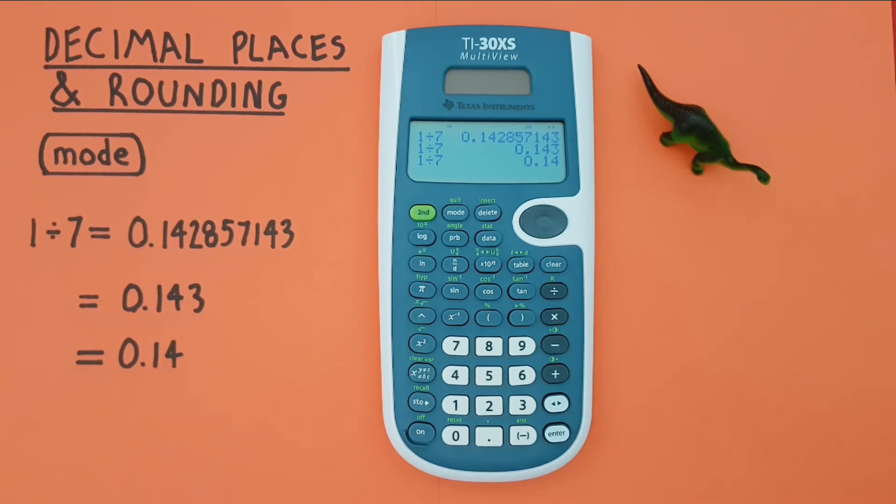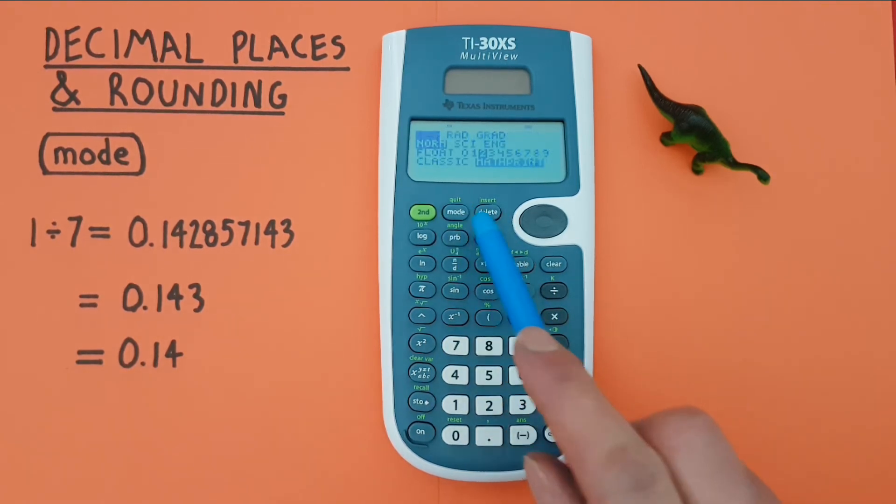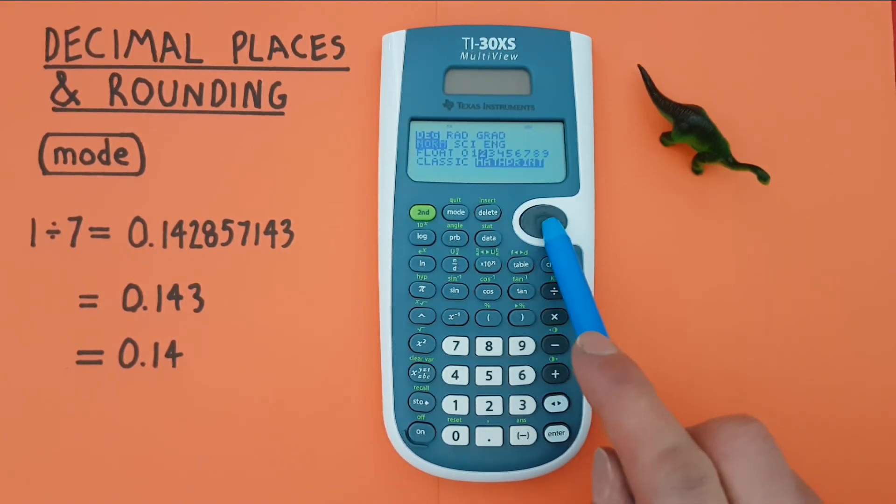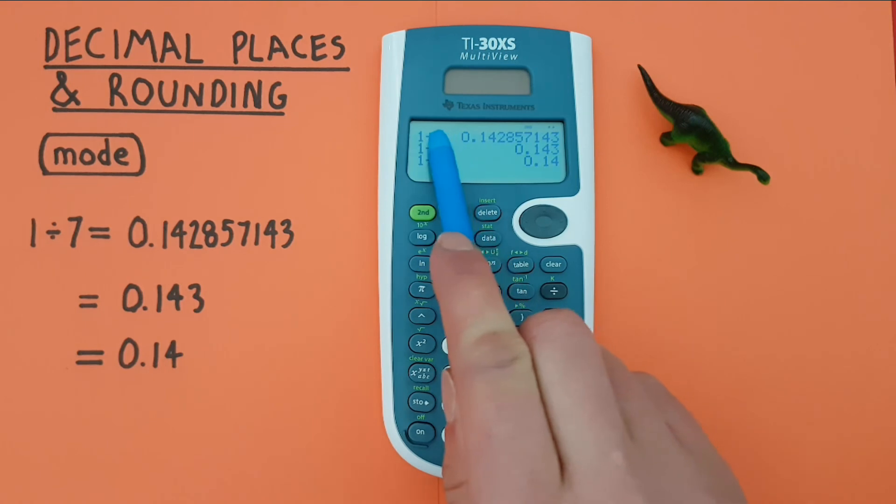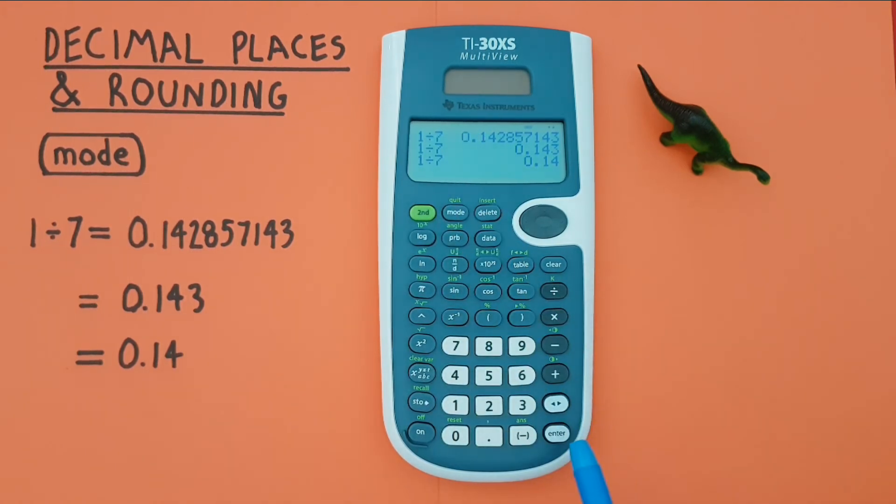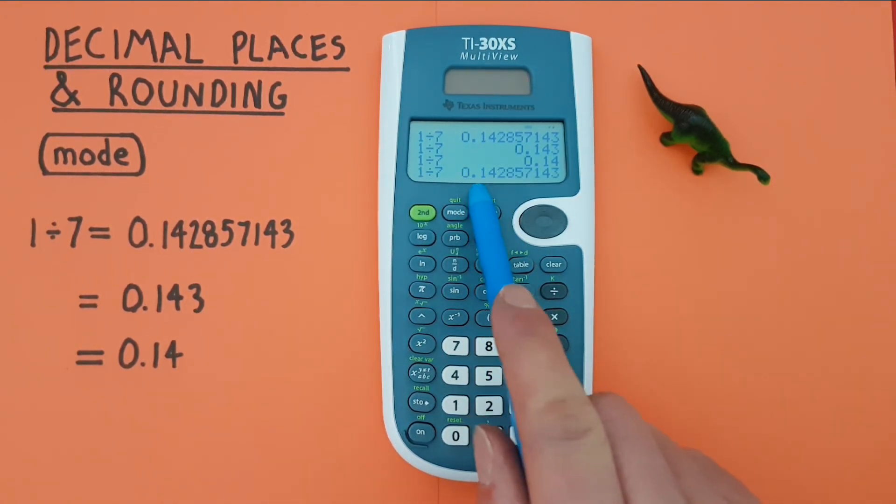Alright, if we're done with this and want to go back to our normal or float mode, we go mode, scroll down to float, press enter and clear. You'll see the word fix is now gone from our screen. And if we press enter, we are again getting all our decimals.